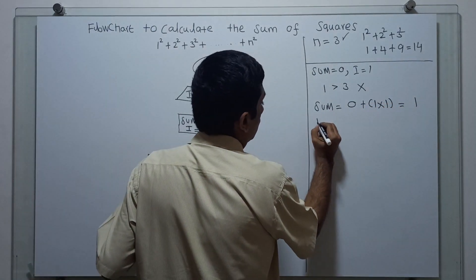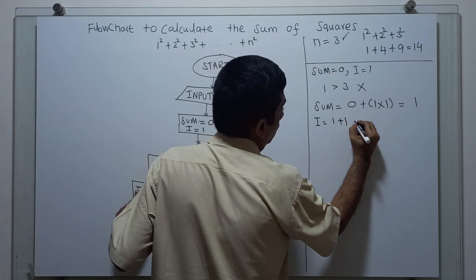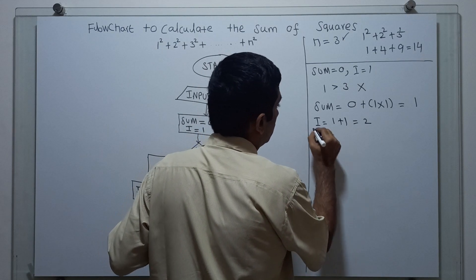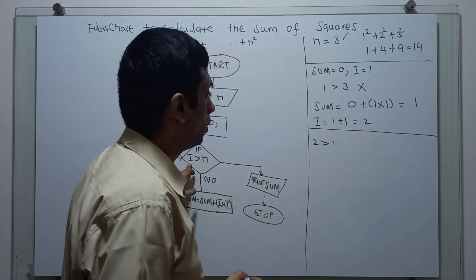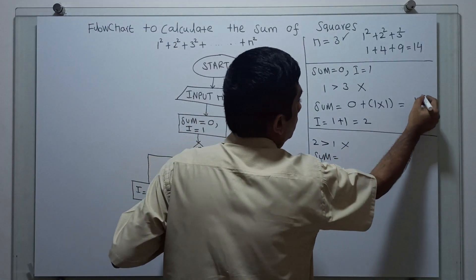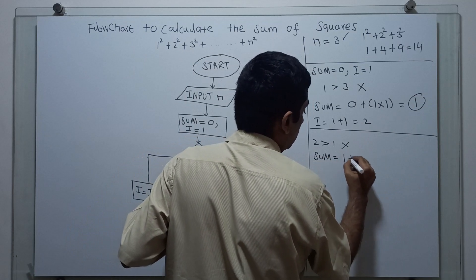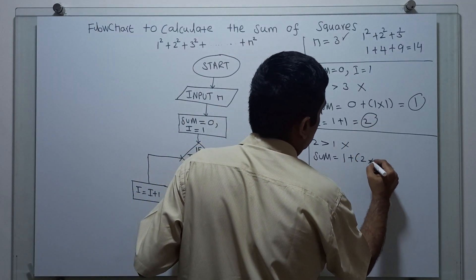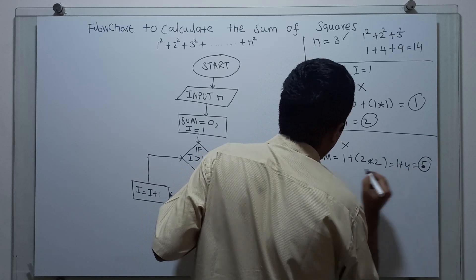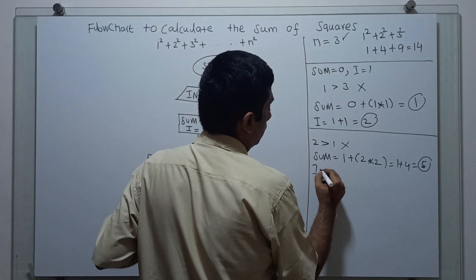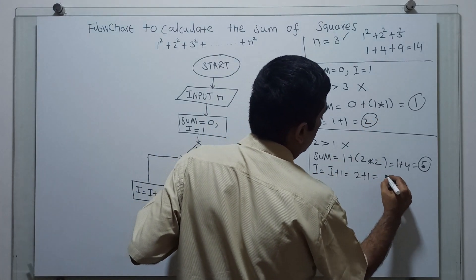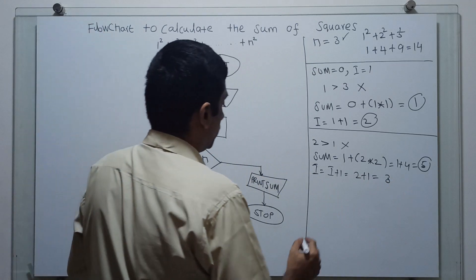i becomes i plus 1, so i equals 2. Check: 2 greater than 3, which is also false. Sum equals sum plus i star i — the existing value of sum is 1, plus 2 star 2, which is 1 plus 4, equal to 5. New value of sum is 5. i equals i plus 1, so i equals 3.